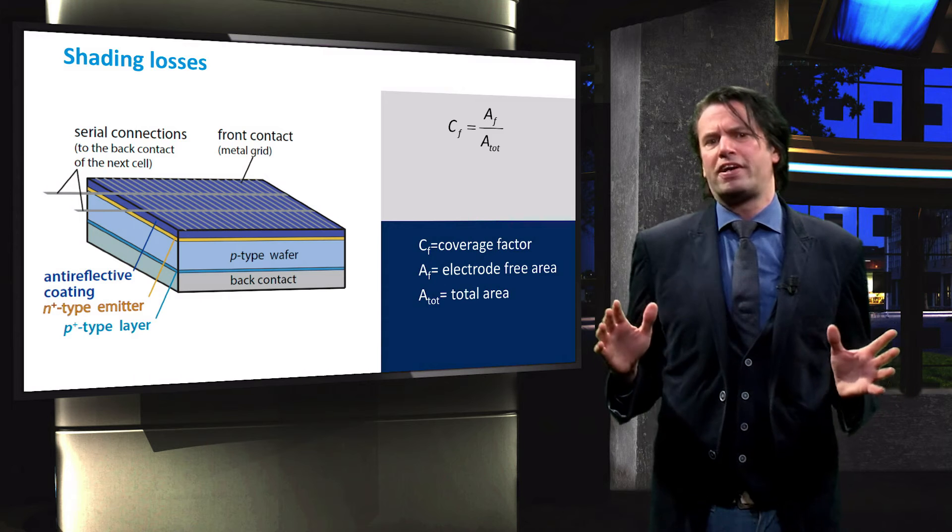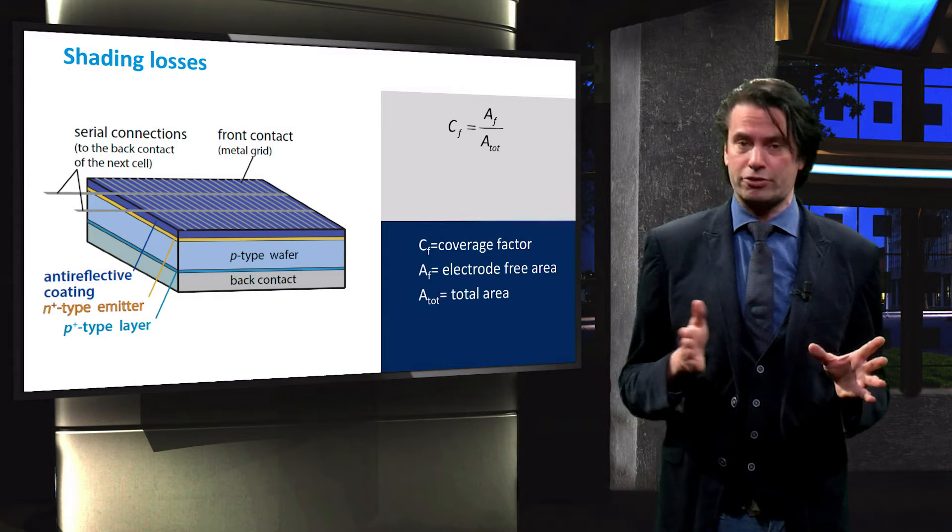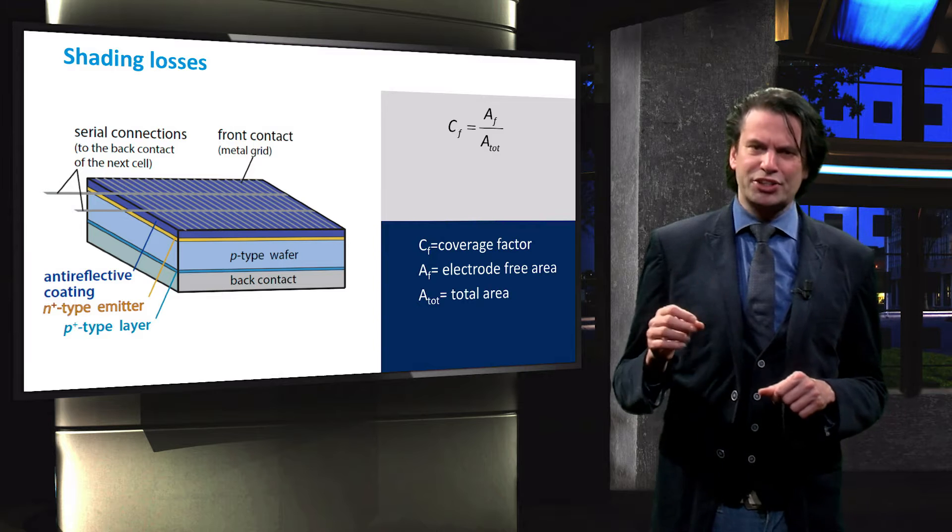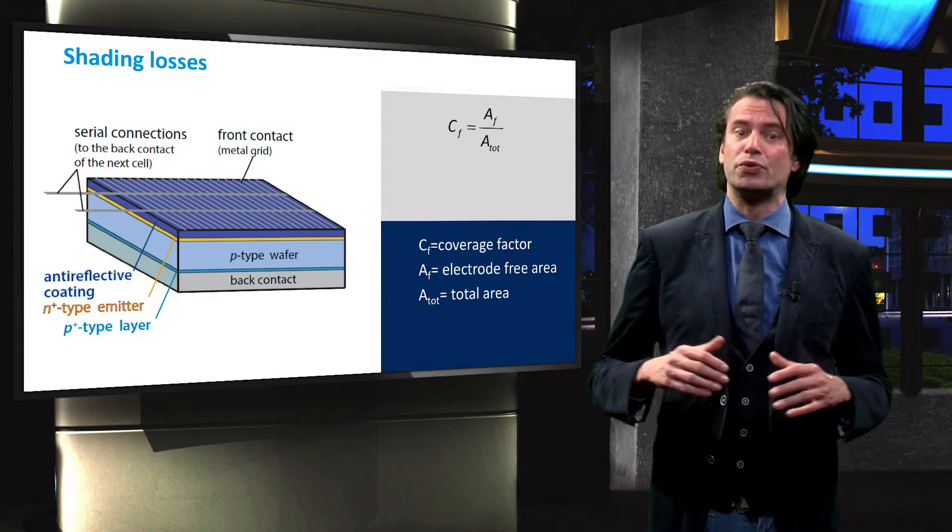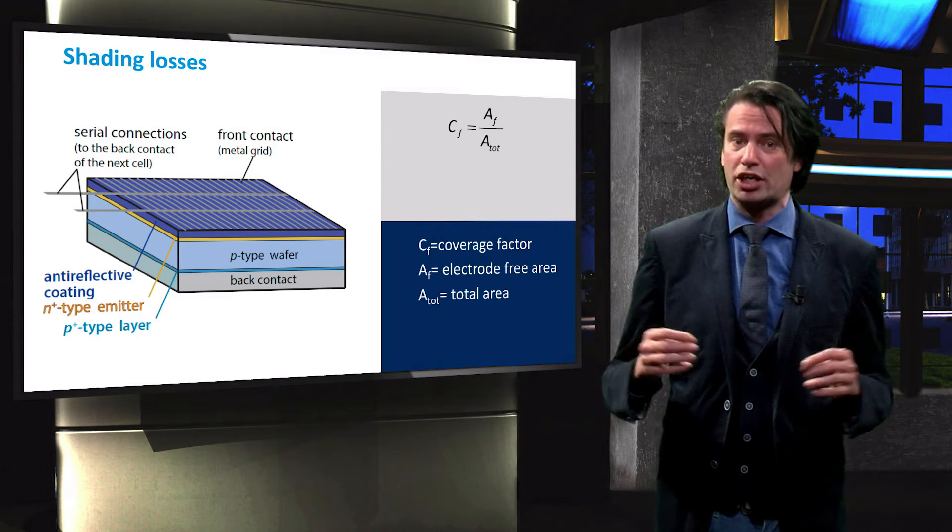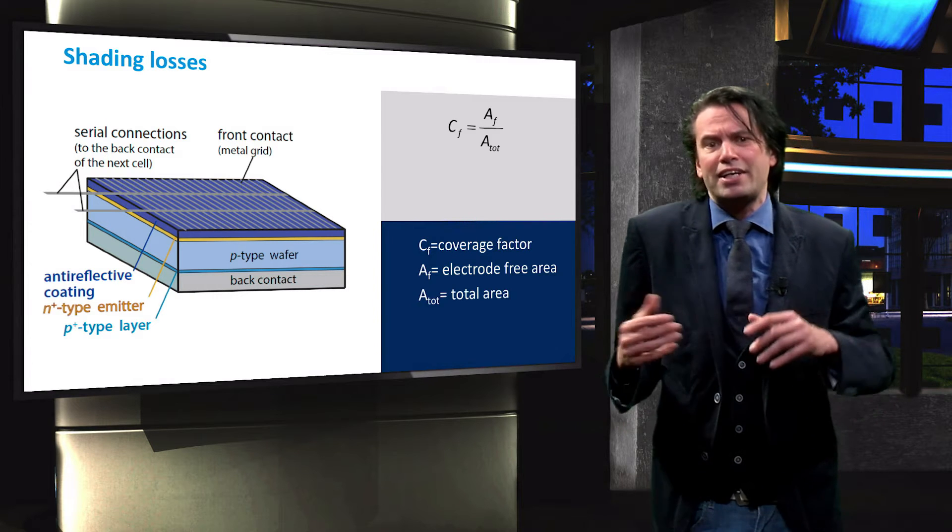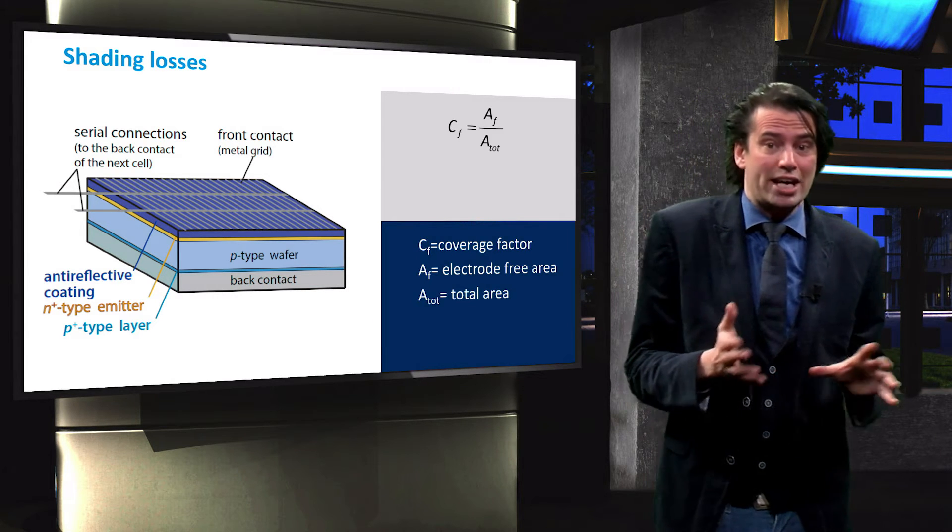The metal fingers have a certain resistance against electron movement. The larger the resistance in the fingers, the greater the losses will be during charge carrier collections. We would therefore like the resistance to be as small as possible.